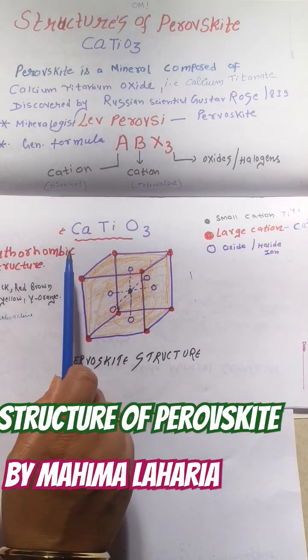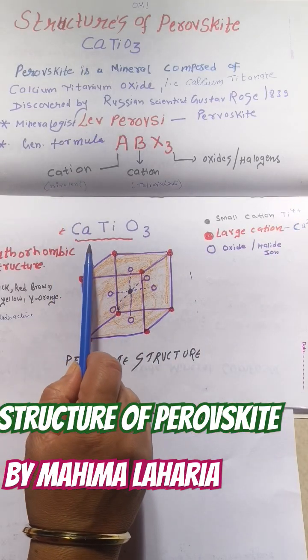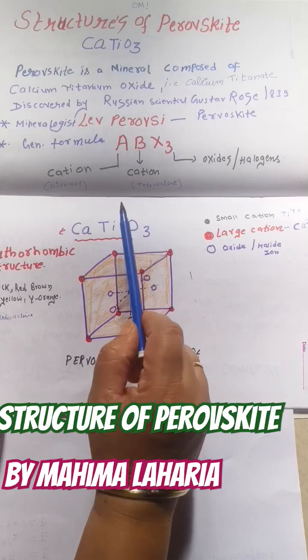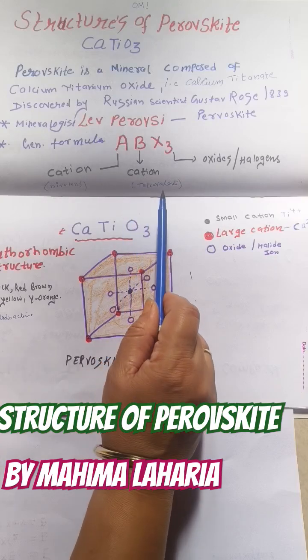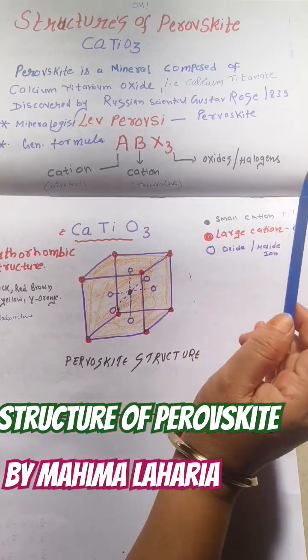In this structure, calcium is our A cation in the 2+ oxidation state, titanium is our B cation in the 4+ oxidation state, and oxygen represents X, the oxide or halide.